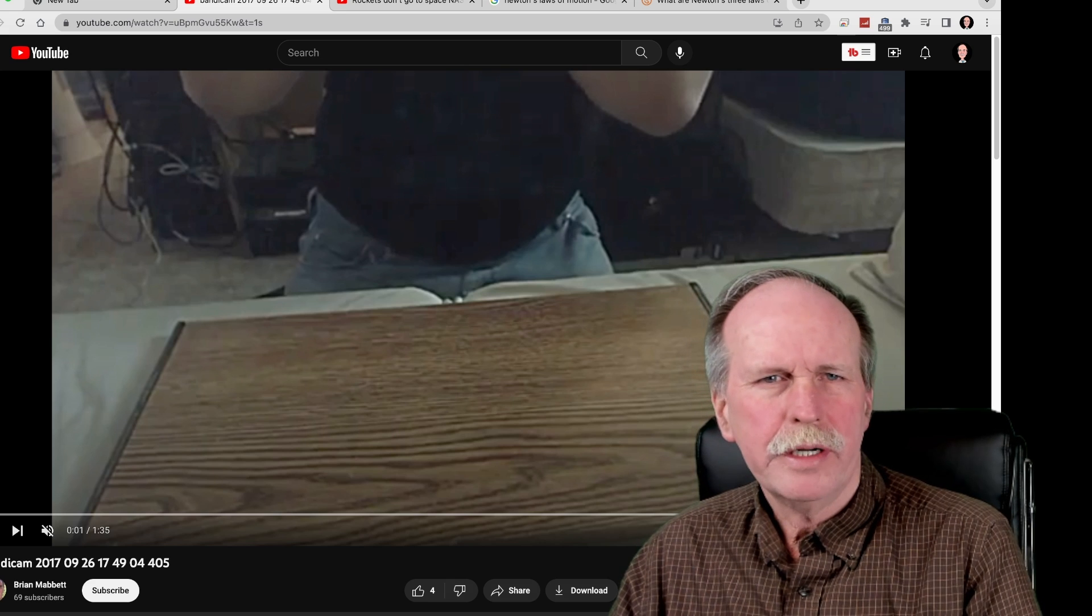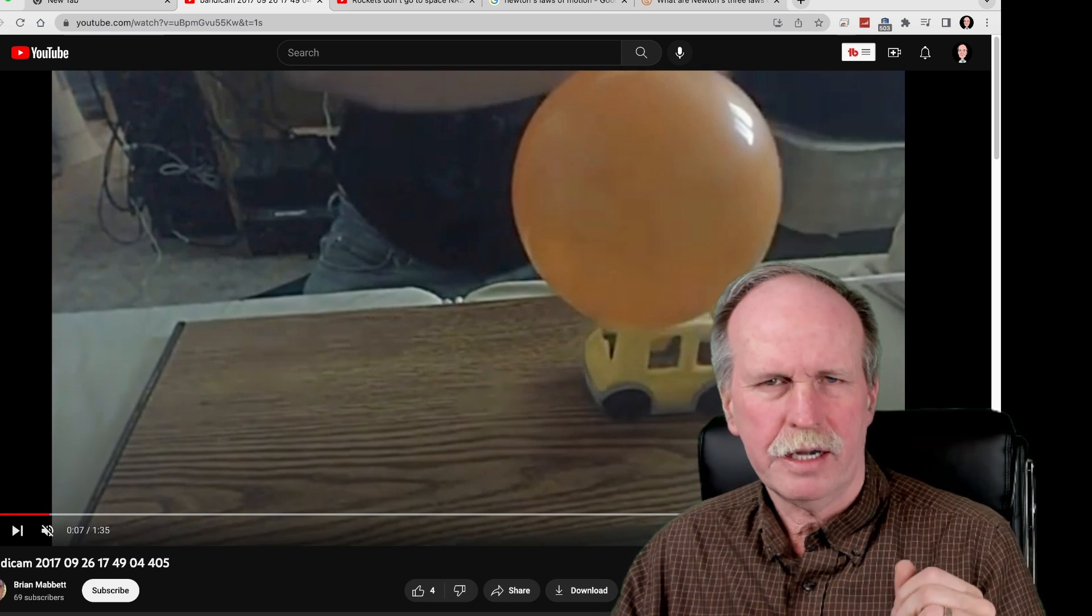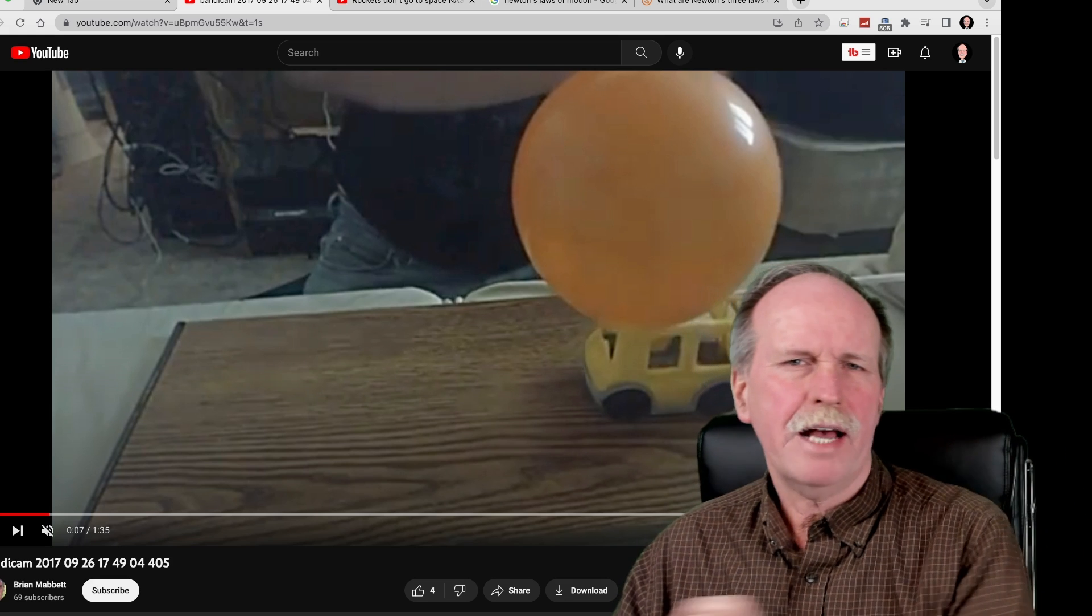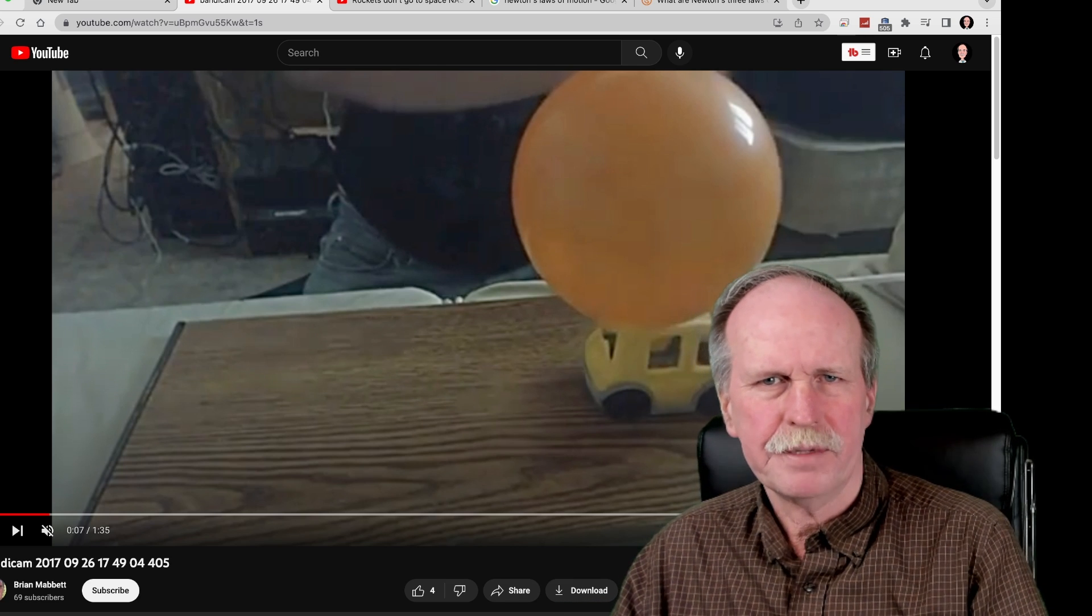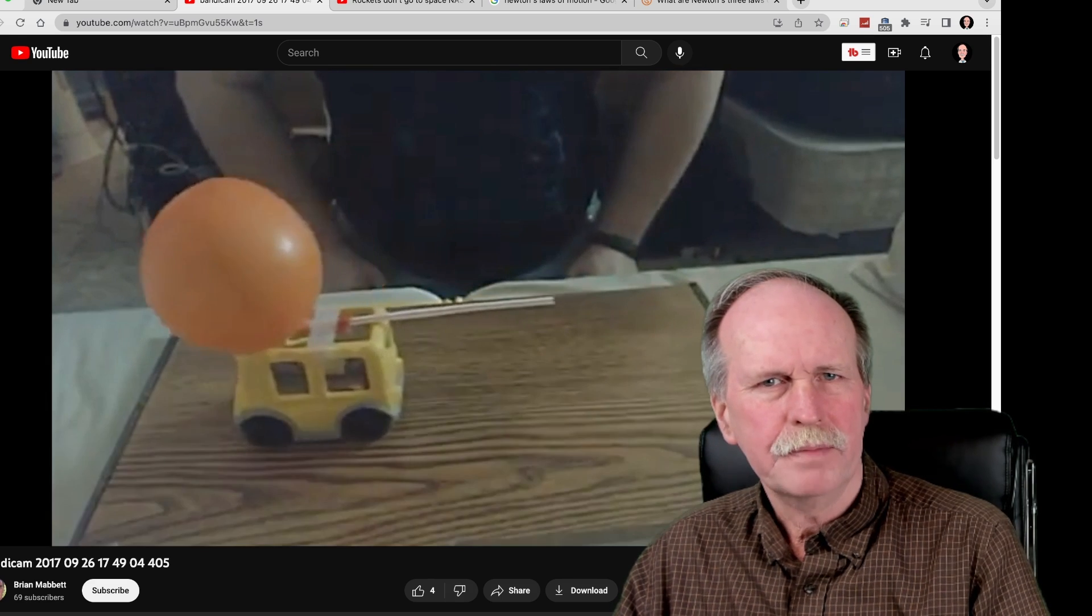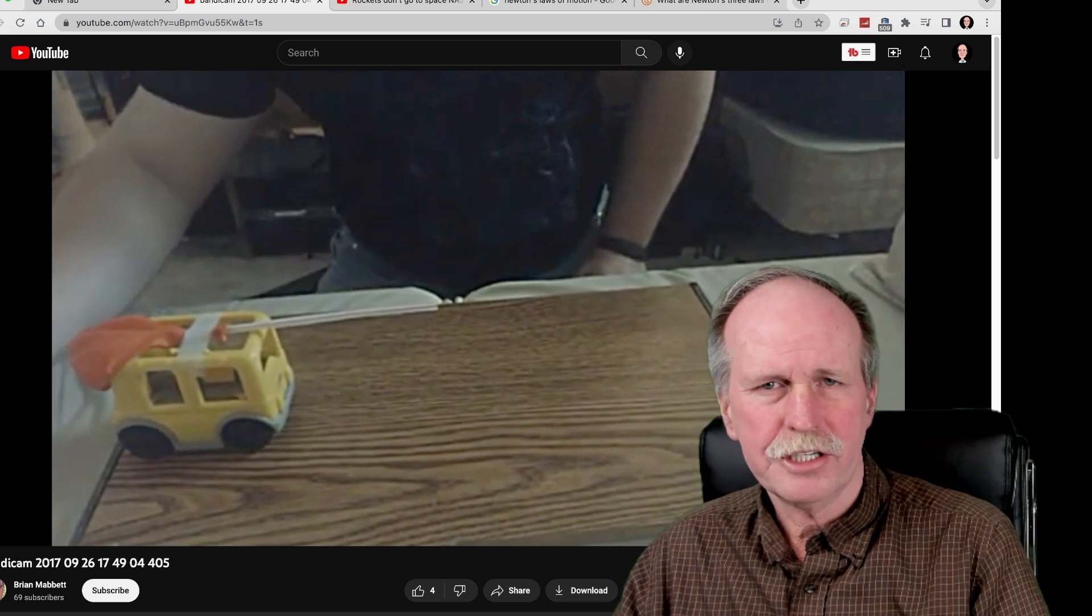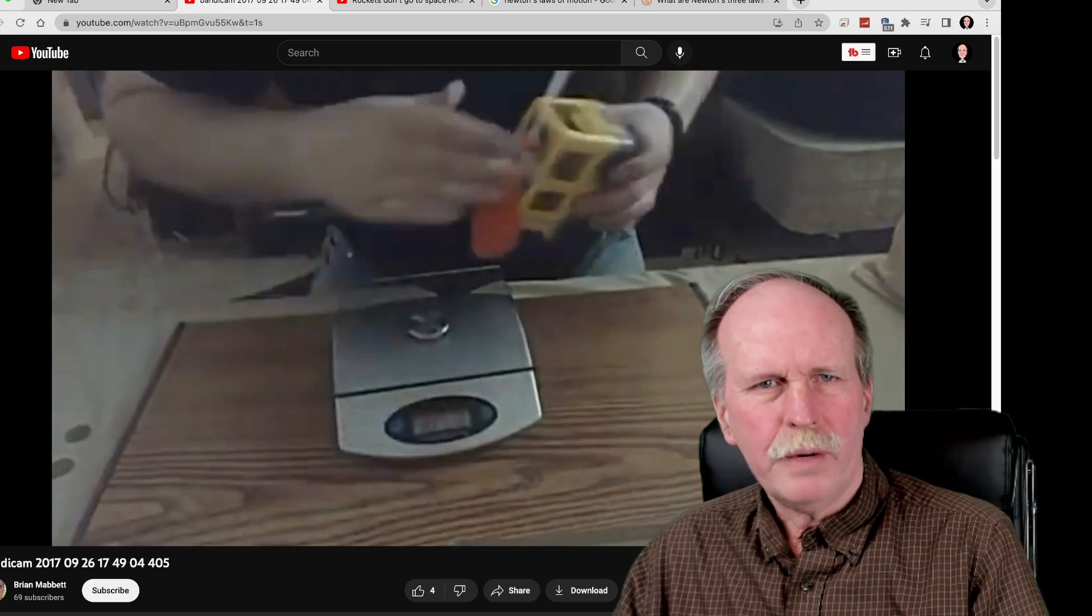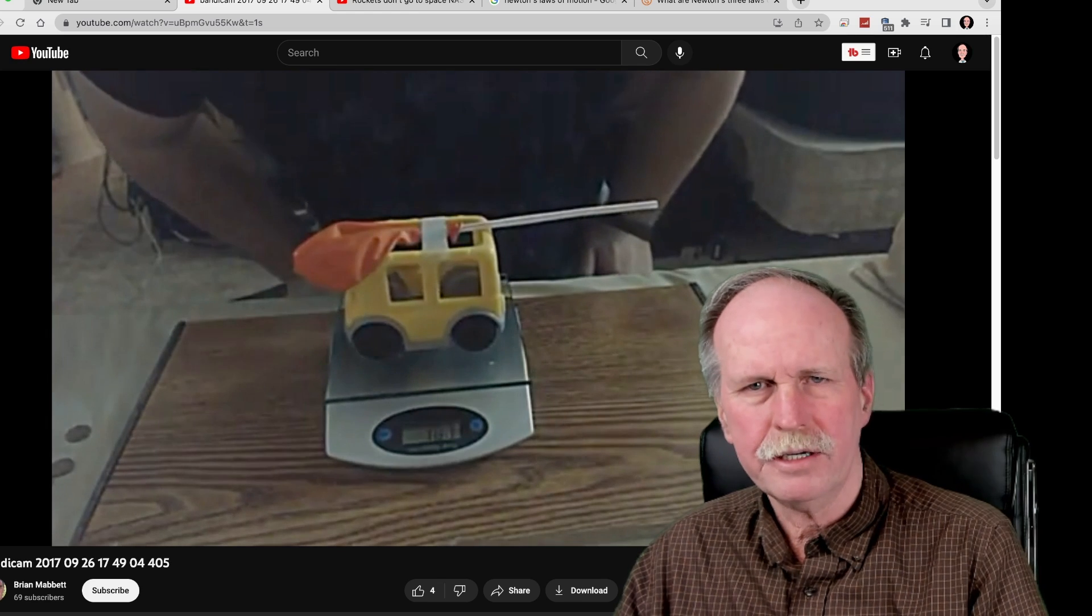He starts off with this piece of wood on a table. He has a car with a balloon attached to a straw. What he's using that for is once he lets the straw go, air will rush out of the balloon and out the nozzle of the straw at the other end. Let's see what happens to the car when that happens. It goes across the table. Now again, it would be really nice to see whether or not this table was level. He doesn't show any measurements with this, which is pretty typical of flat earth experiments.